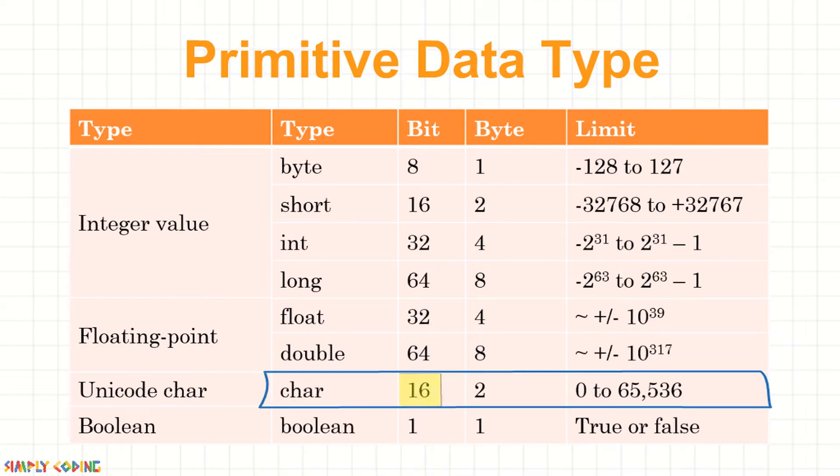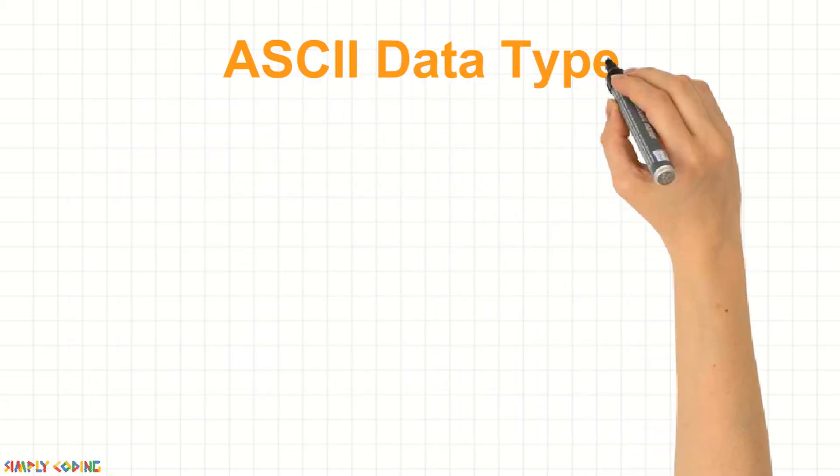Next is character data type. It has 16 bits or 2 bytes of storage space and can store 1 character in unicode. Here, let me take a moment and explain ASCII data type and unicode data type.